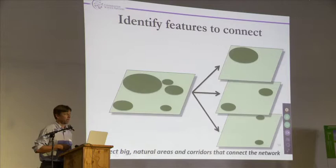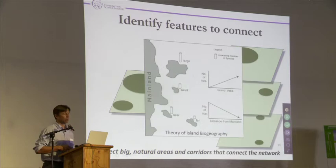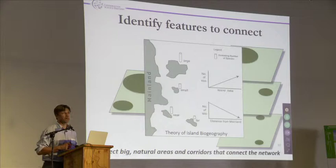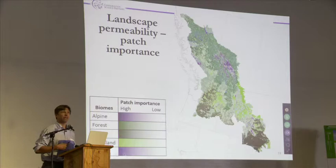Identifying the features to connect: the bottom line is we want to protect the big natural areas and the corridors to connect that network. What I'm really relying on here is the theory of island biogeography — some of our basic foundational principles underlying conservation biology and landscape ecology: big, connected, things that are relatively close. I think of this approach as sort of an update or a refinement of that in a variety of ways.